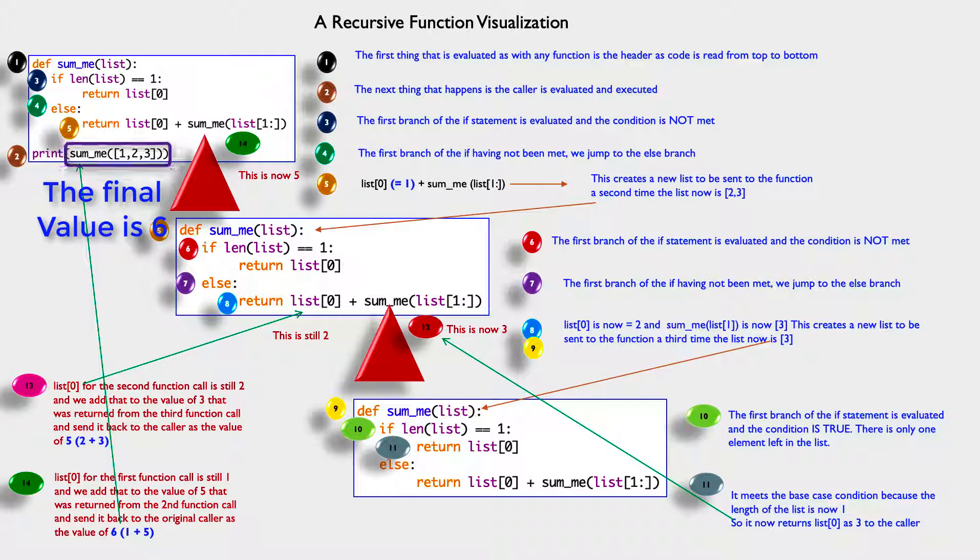That returns back to the original caller, which was nestled in our print statement, sum_me with the original list of one, two, and three. And that's how it works.